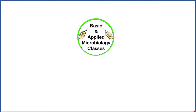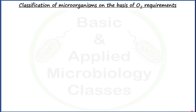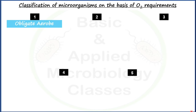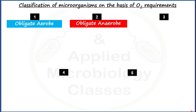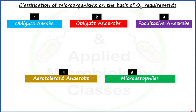Hello everyone, welcome back. Today we are going to talk about classification of microorganisms on the basis of oxygen requirements. We can classify microorganisms into five types: first, obligate aerob; second, obligate anaerob; third, facultative anaerob; fourth, aerotolerant anaerob; and fifth, microaerophiles.